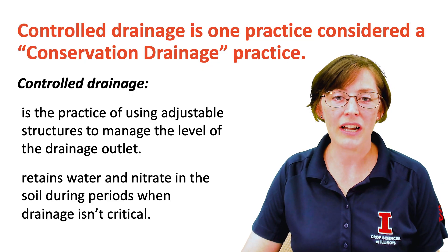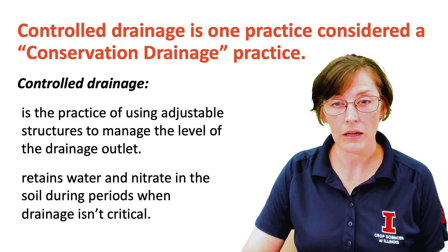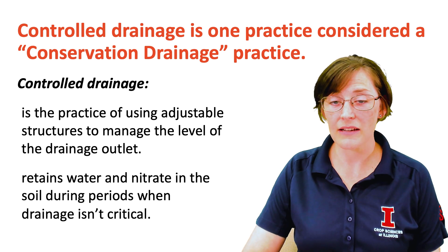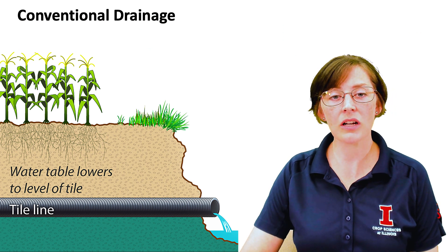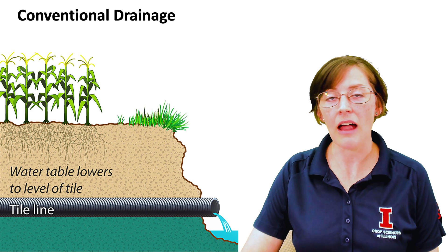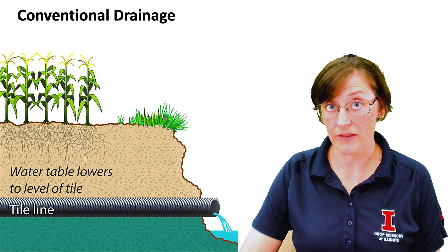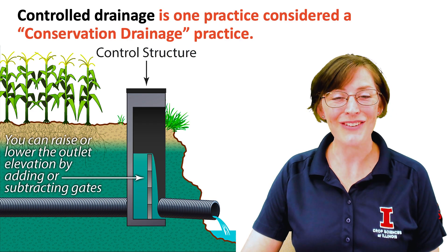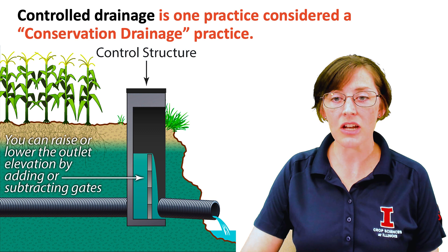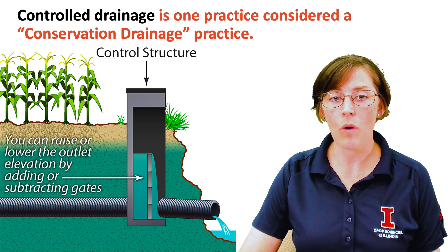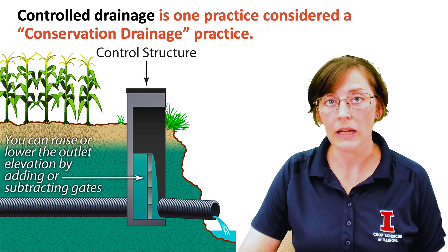The practice known as controlled drainage is the practice of using adjustable control structures to manage the level of the drainage outlet. This practice retains water and nitrate in the soil when drainage isn't critical. You can see from the figure that under conventional drainage you lower the water table to the elevation of the drain pipe, and once that drain pipe is installed you're always lowering the water table to that elevation. However, on the right side of the picture, under controlled drainage, the control structure allows you to manage the level of the drainage outlet. Water will not flow out of that drain pipe unless it is at or above the elevation of the top board in that control structure.